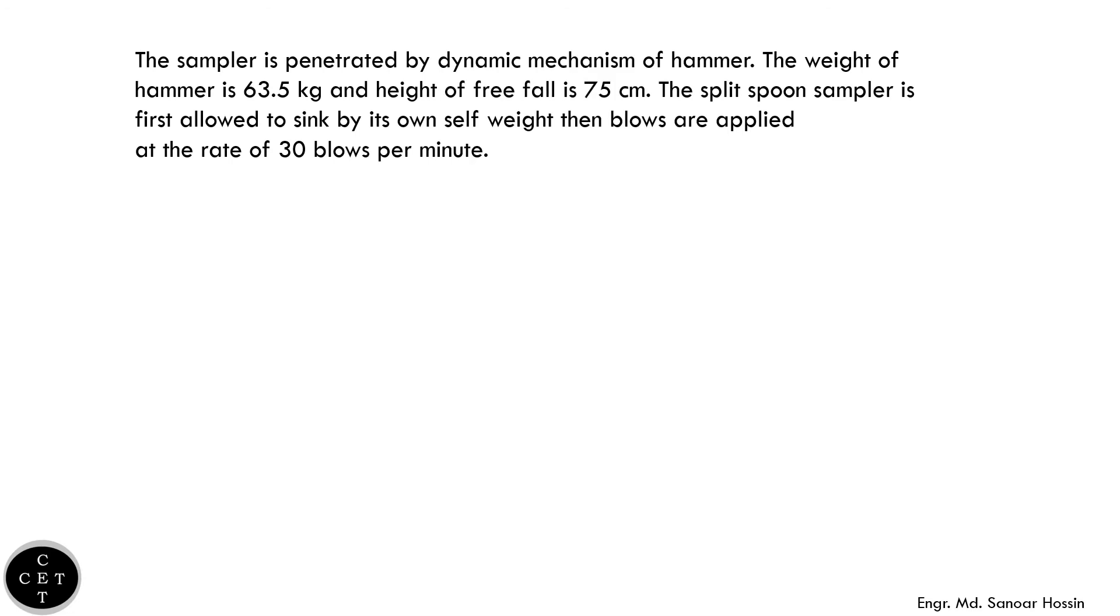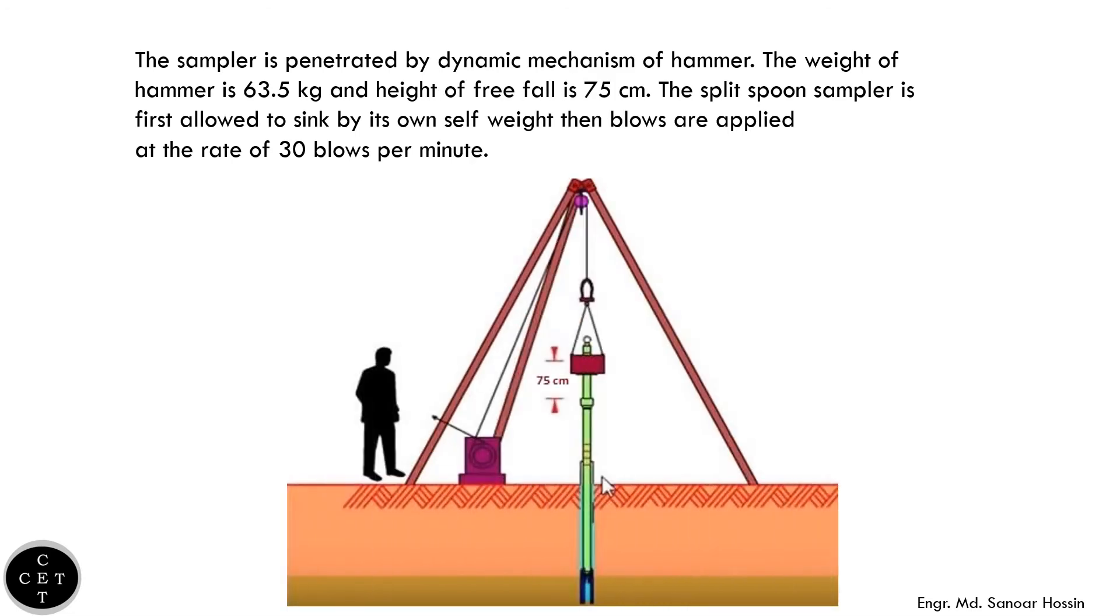The sampler is penetrated by dynamic mechanism of hammer. The weight of hammer is 63.5 kilograms and height of free fall is 75 centimeters. The split spoon sampler is first allowed to sink by its own self weight, then blows are applied at the rate of 30 blows per minute.